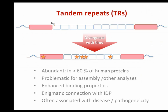Tandem repeats cause problems for all sorts of analyses, starting with assembly and propagating to any downstream analysis including alignment, looking for positive selection, inferring trees, and so on. They are also very interesting genomic sequence features. In proteins, for example, they often offer enhanced binding properties and form rigid scaffolds to help protein-protein interactions. They also have an interesting enigmatic connection with intrinsically disordered proteins — proteins that don't have a stable folded structure — though this phenomenon is not very well described.